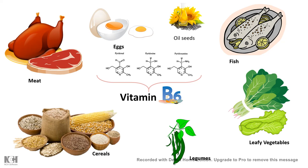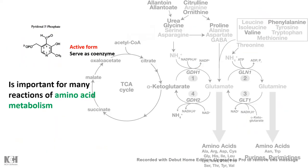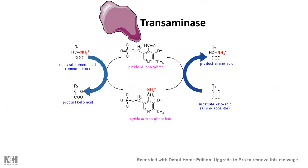Vitamin B6, or pyridoxal 5-phosphate, is critically important in amino acid metabolism. Enzymes involved in transamination and deamination require PLP as a coenzyme — in particular, transaminases use PLP. During transamination, when a substrate amino acid is converted to a keto acid, pyridoxal phosphate is simultaneously converted to pyridoxamine phosphate.